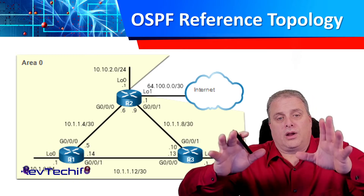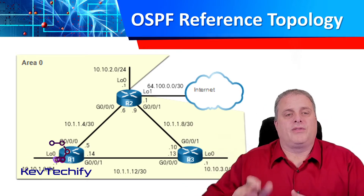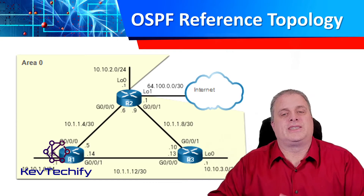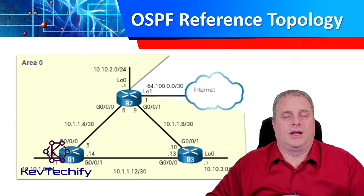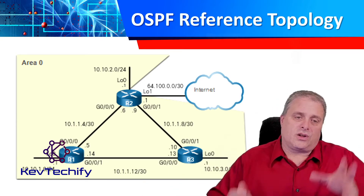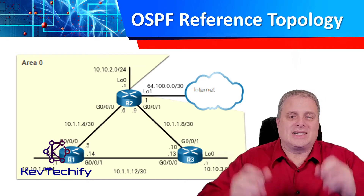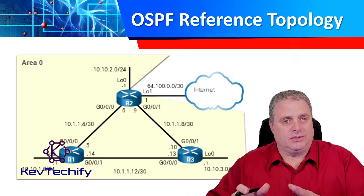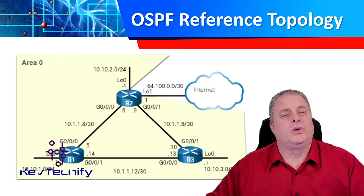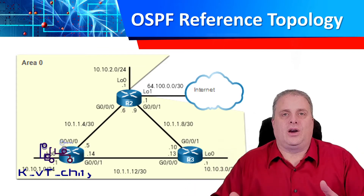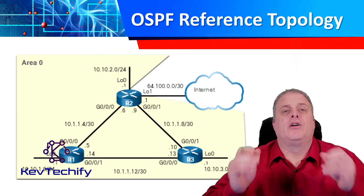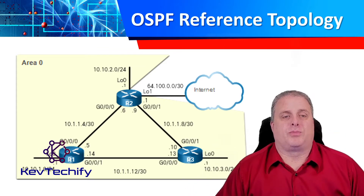Off of R2, we have a loopback that will also simulate the internet connection. All of these interfaces, all of these networks, except for that internet connection off of R2, are in one area — one operational area for our OSPF.